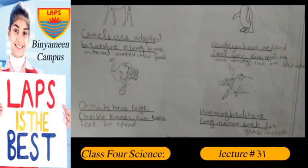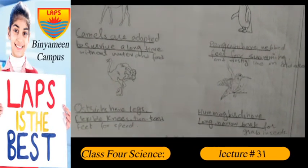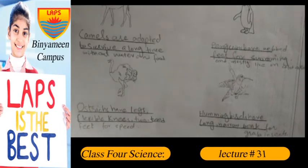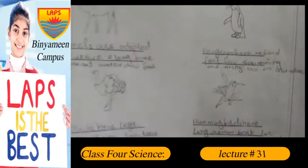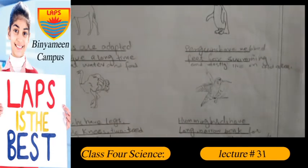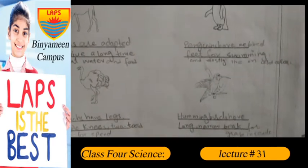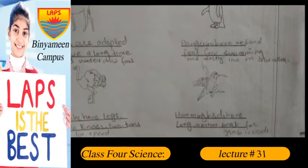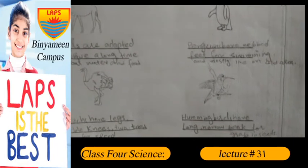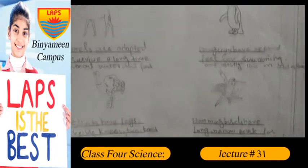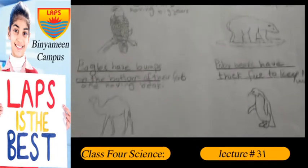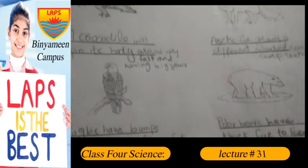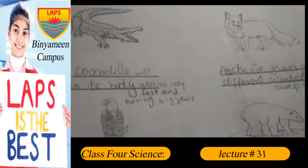Ostriches have legs with flexible knees and two feet for speed. Hummingbirds have a long, narrow beak for grabbing insects.